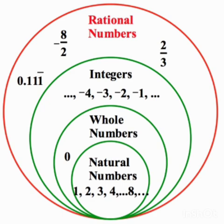What is the additive inverse of 1 by 2? Minus 1 by 2. What is the additive inverse of minus 5 by 7? 5 by 7. Plus becomes minus, minus becomes plus — that is the negative of a number. Reciprocal means upside down — A by B becomes B by A.